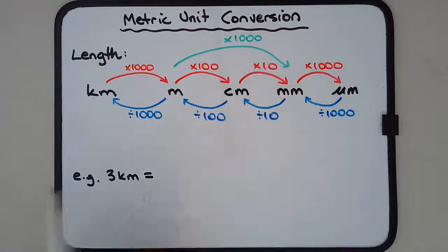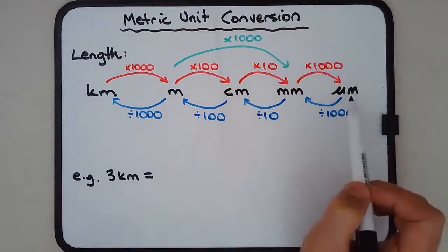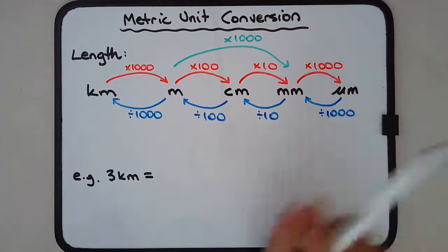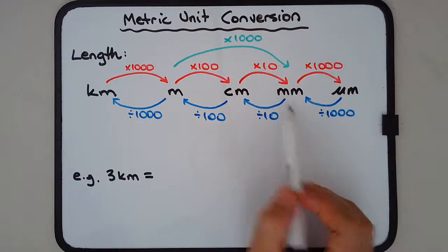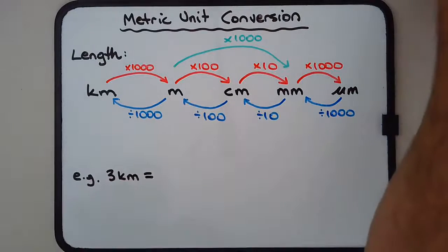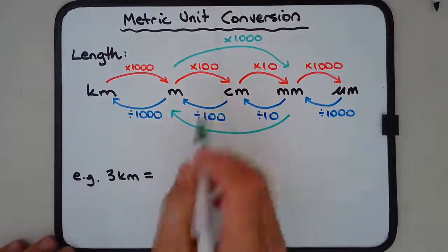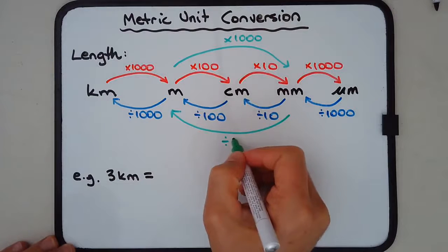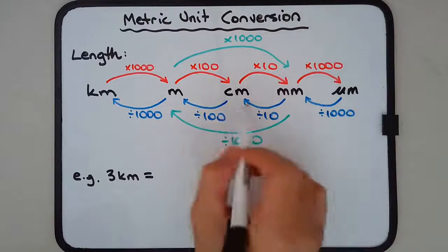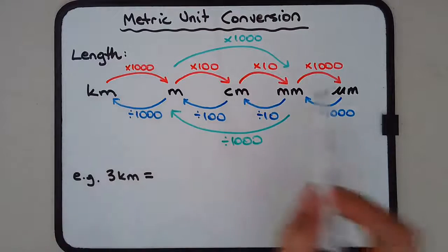Converting millimeters to micrometers: multiply by a thousand. You can see the pattern — kilometers to meters multiply by a thousand, meters to millimeters multiply by a thousand, millimeters to micrometers multiply by a thousand. We have nanometers as well but we won't cover that. Going backwards: micrometers to millimeters divide by a thousand, millimeters to centimeters divide by 10, centimeters to meters divide by 100. Millimeters to meters: divide by a thousand, cutting out centimeters entirely.